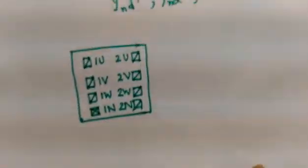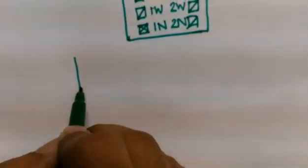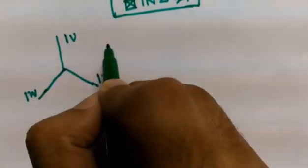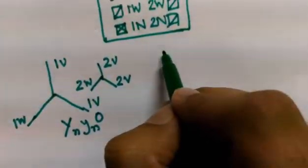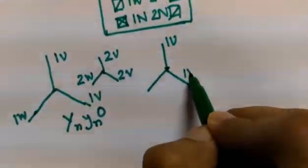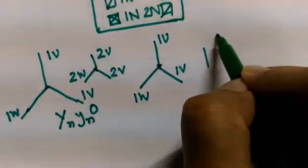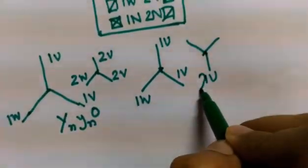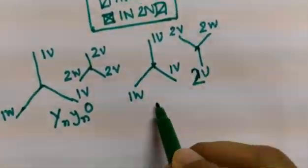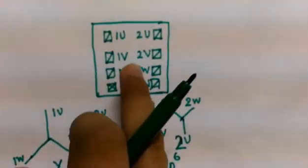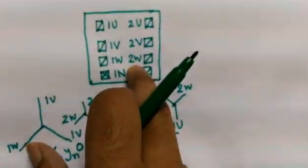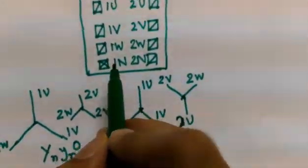For YnYn0, the vector group looks like this: 1U, 1V, 1W on the primary side, and 2U, 2V, 2W in phase with the primary — this is your YnYn0 vector group. For YnYn6, the secondary vectors 2U, 2V, 2W are displaced by 180 degrees — this is your YnYn6 vector group. Now we will determine which type of vector group this transformer has.